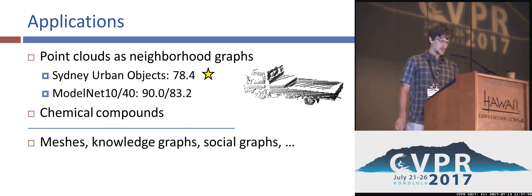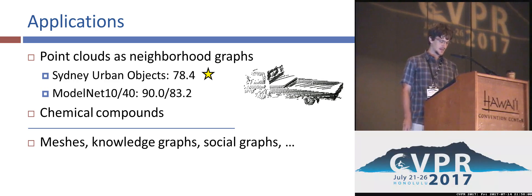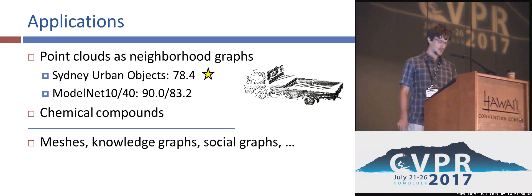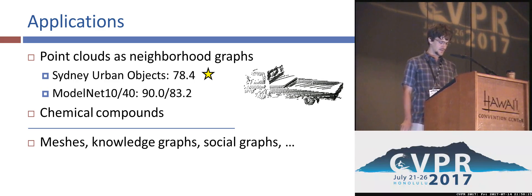We demonstrate our method on point cloud classification. While other deep learning works have used volumetric or set representations, we advocate treating point clouds as graphs with proper attributes. This led us to reaching state-of-the-art on the Sydney urban objects dataset and competitive performance on ModelNet. We also evaluate on several common graph classification datasets and demonstrate that considering edge labels improves performance. On top of that, our method is applicable in a range of domains, such as mesh processing or knowledge graphs.